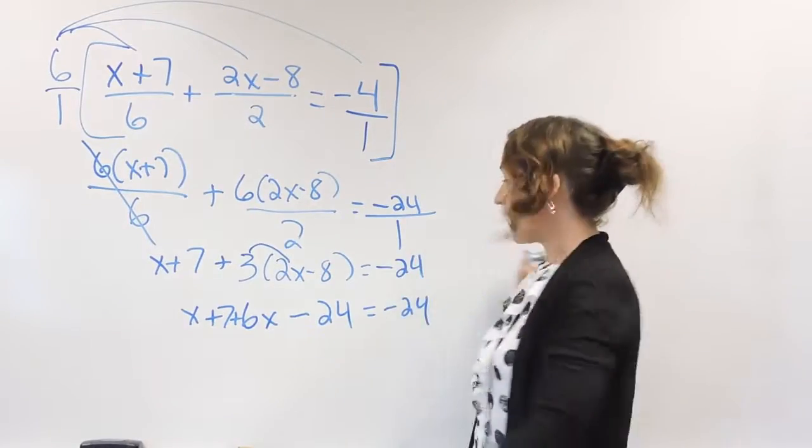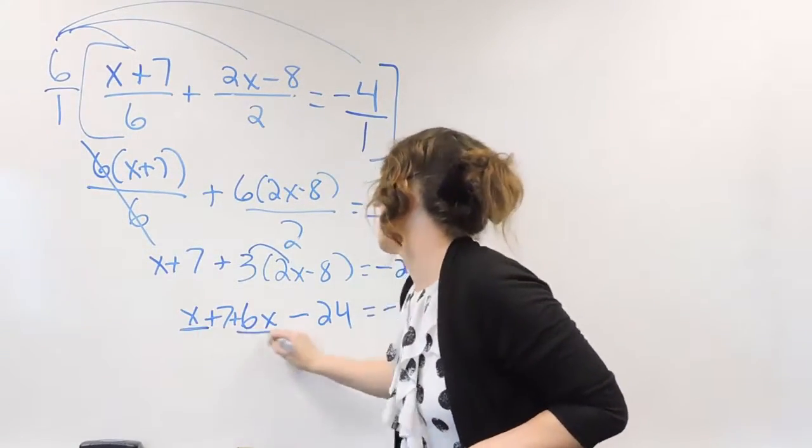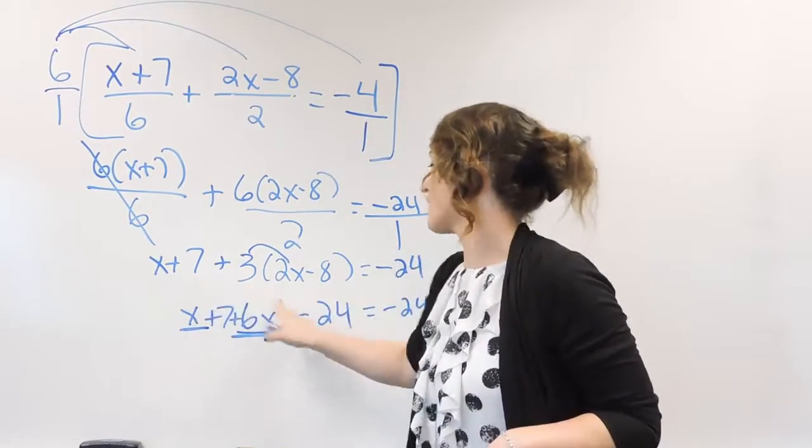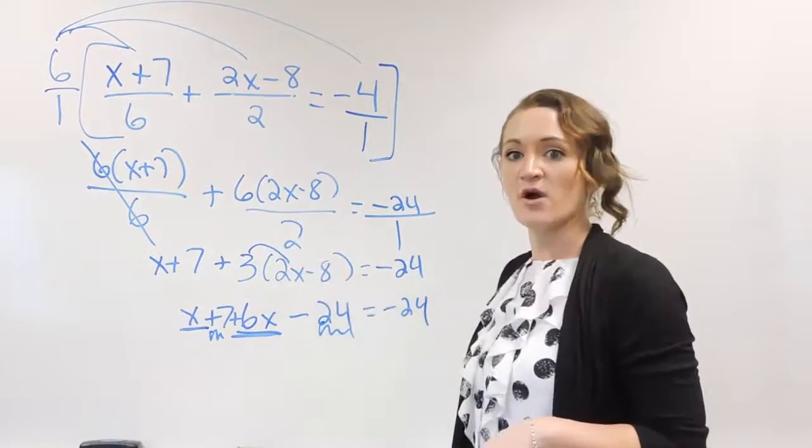The next thing you do after distributing is combining your like terms. So let's see, we have like terms over here with our x values, our variables, and then we have our numbers.